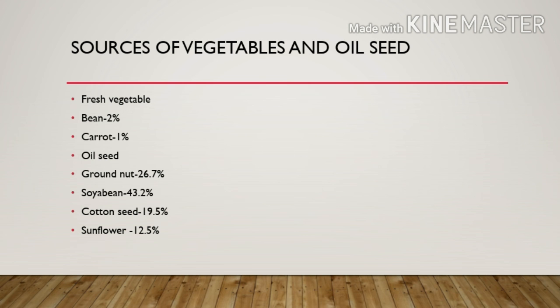Regarding vegetables and oil seeds: fresh vegetables like beans contain around 2%, and carrot contains 1% protein. For oil seeds, groundnut contains 26.7% protein and soybean contains 43.2% protein — making soybean one of the highest protein sources. Cottonseed contains 19.5% and sunflower 19.5% protein.